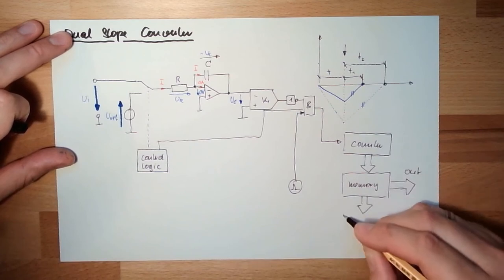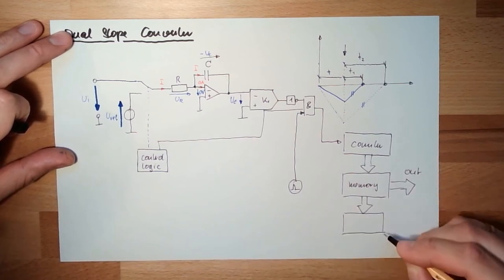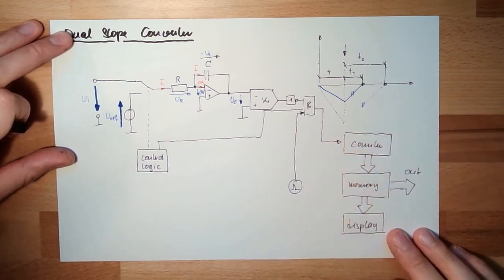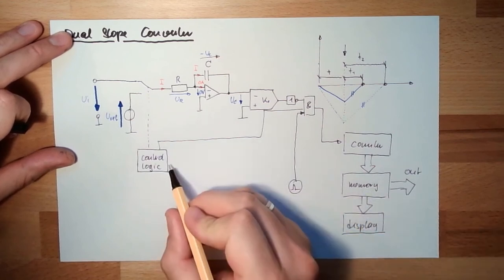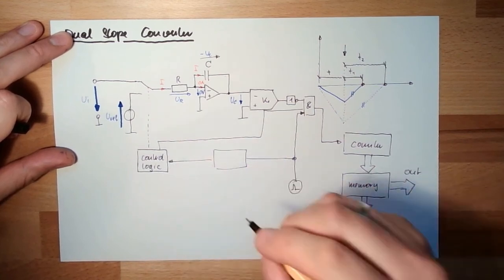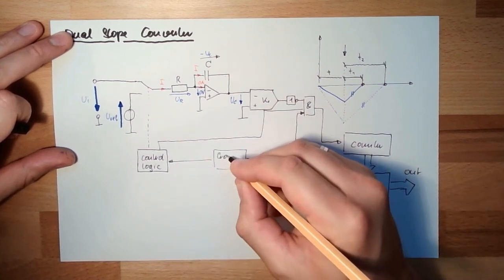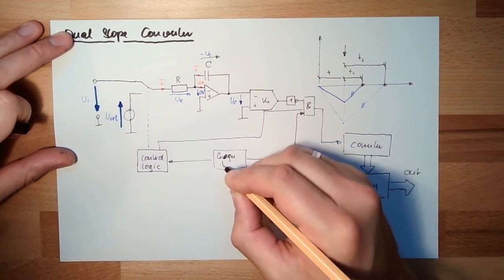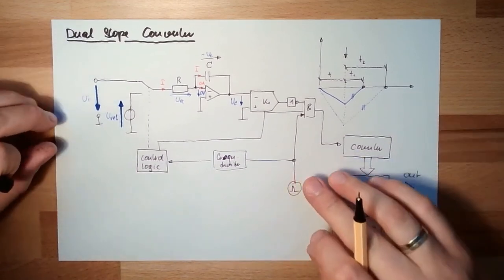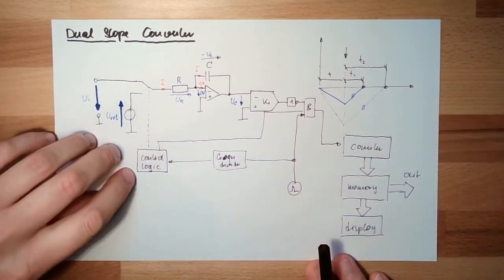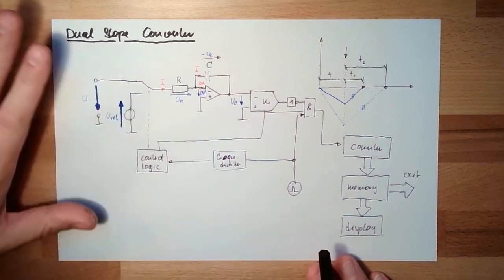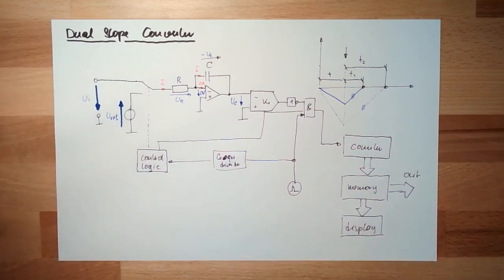There might be also some sort of display. This is pretty much always the same here. Control logic also need to know a little bit, so that there is maybe a frequency divider that we do not count with how many megahertz. The control logic does not need to get too much. This is the usual thing of a dual slope converter.